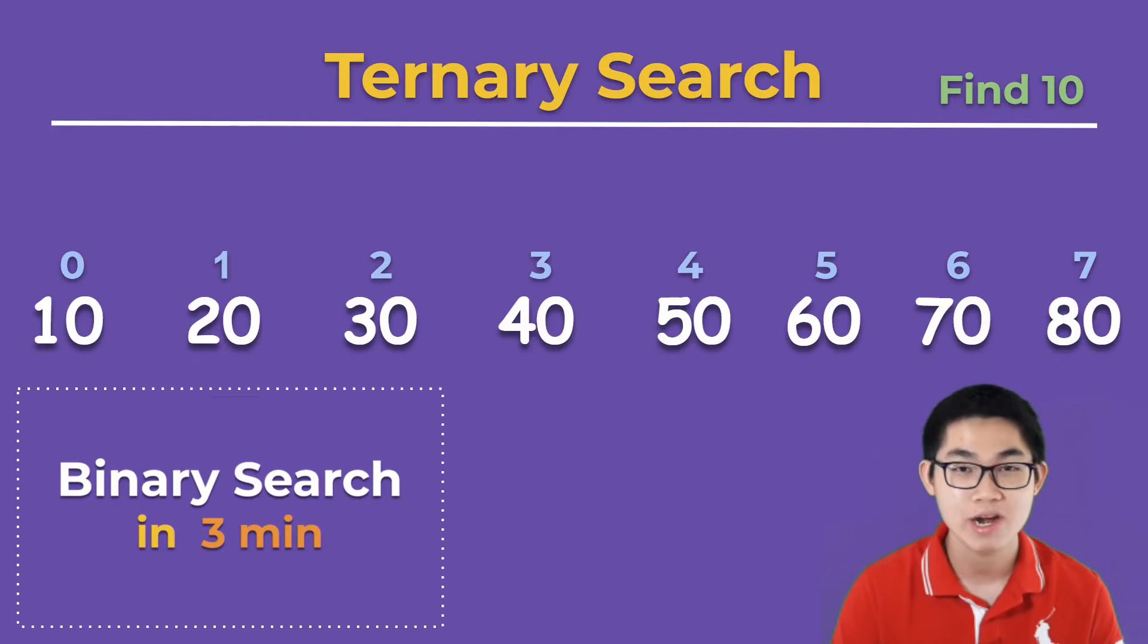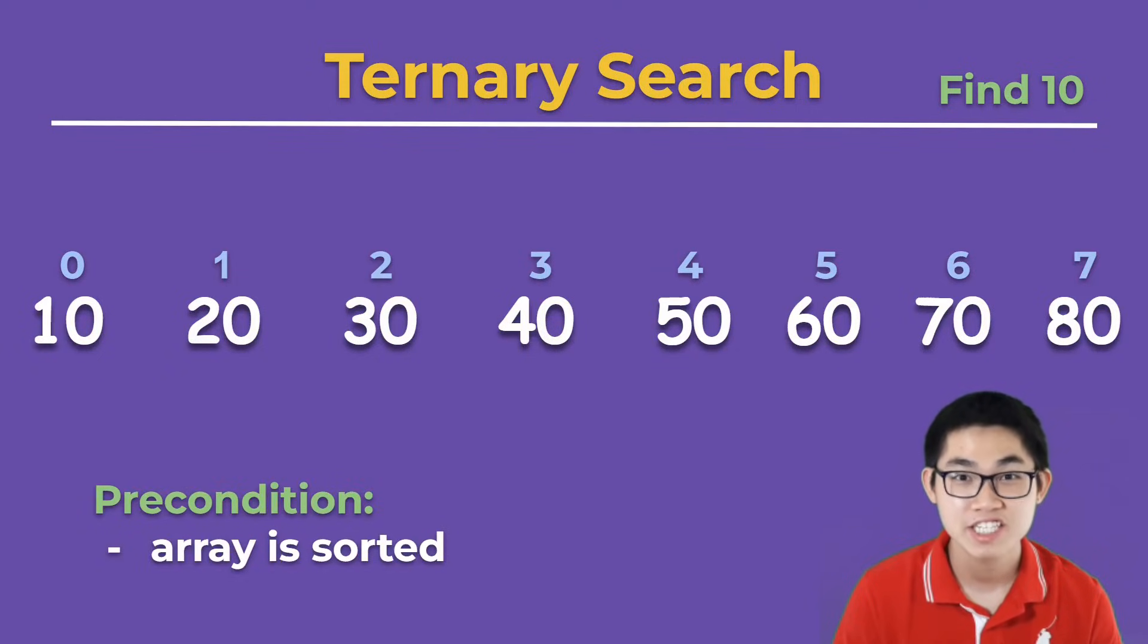In the previous video, I already explained binary search, so if you want to check it out, I'll link it in the description below. The precondition to ternary search is that the array must already be sorted from least to greatest.